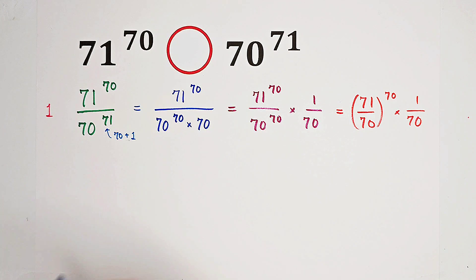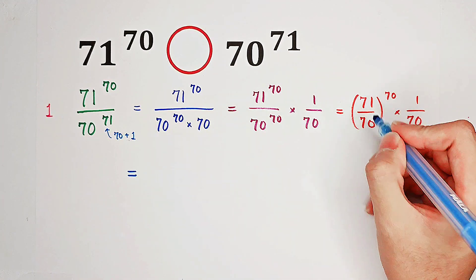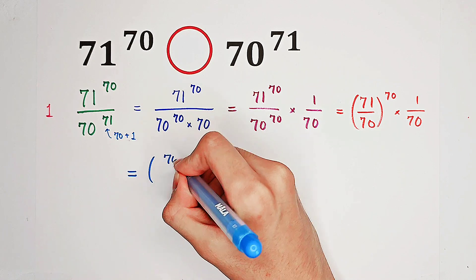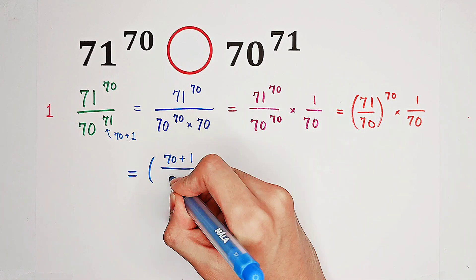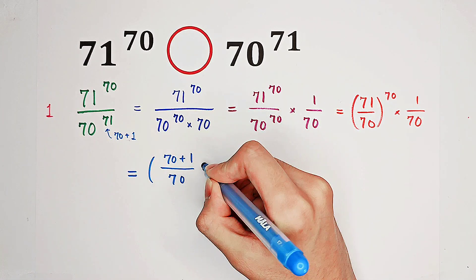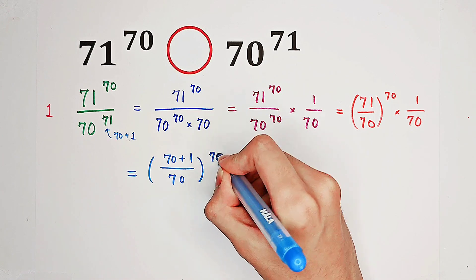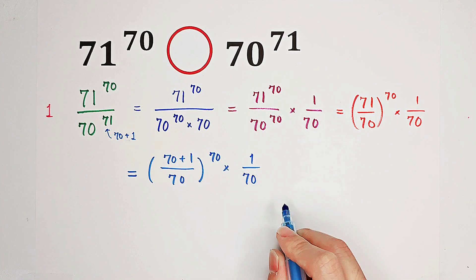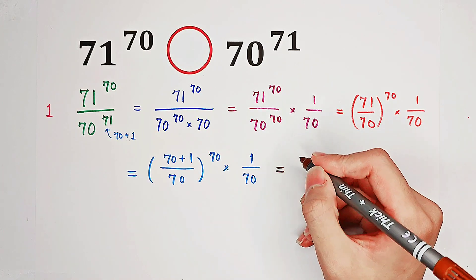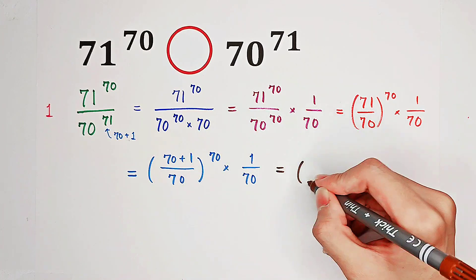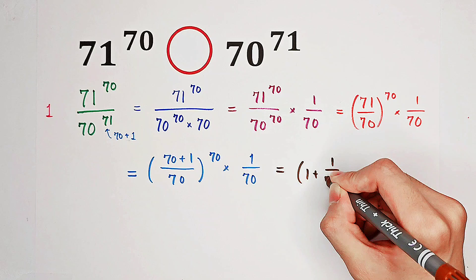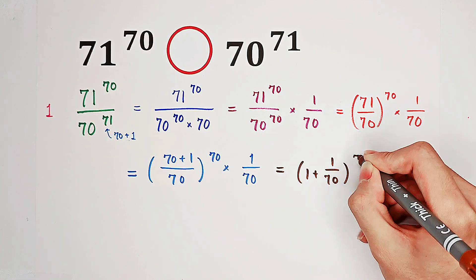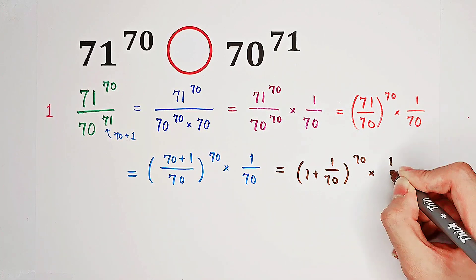Now 71 over 70 is 70 plus 1 over 70, and then also the power of 70, then times 1 over 70. Now, you can notice that in the bracket, it is actually 1 plus 1 over 70, and then also the power of 70, and then times 1 over 70.